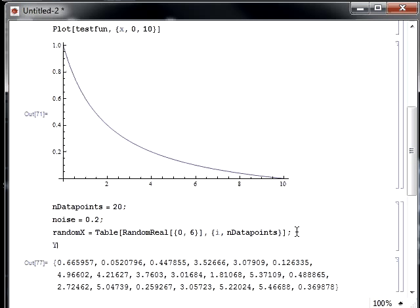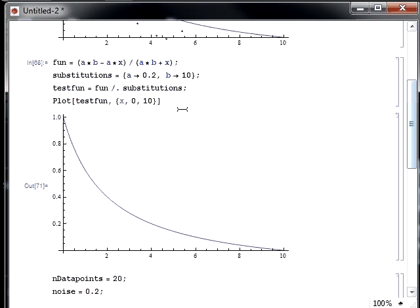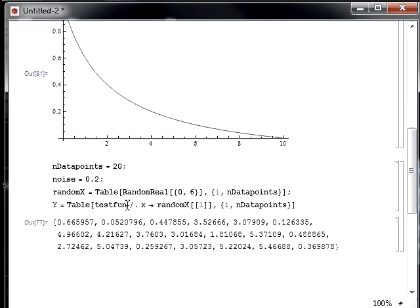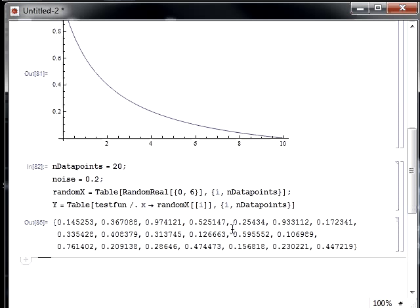Now we want y values that obey this function here, just to simulate our random data. So we'll do a table again. And then we'll substitute our test function with these random x values. So x becomes random x for that iteration, for each iteration up to n data points. So what we've done is for each element of the table, we take our test function, which again, remember, looks like this. So we know what the values are except for x. And then we substitute in x using a slash dot arrow and that random x value at that iteration. So then y looks like this down here.